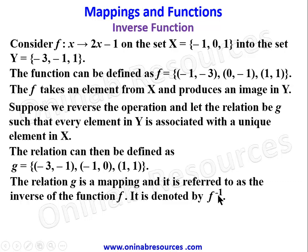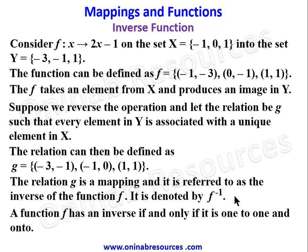The relation g is a mapping and it is referred to as the inverse of function f. It is denoted by f to the power of negative 1, written f⁻¹. It doesn't mean 1 over f. A function f has an inverse if and only if it is one-to-one and onto — that is, if it is a bijective function — otherwise the inverse does not exist.